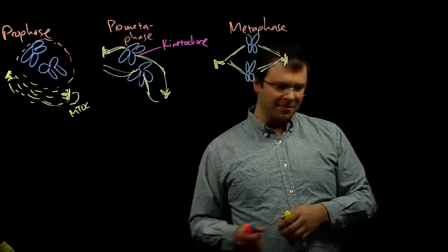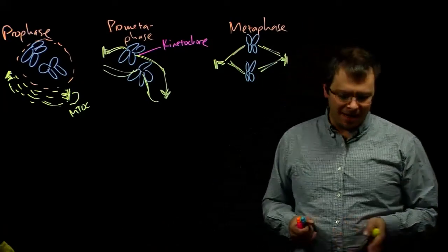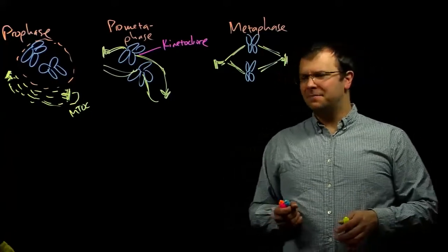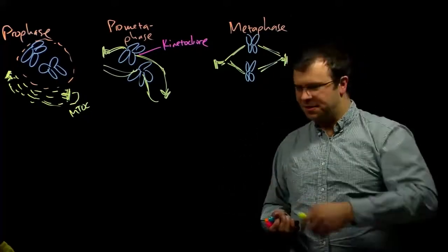These chromosomes are lined up down the center of the cell in a structure that is commonly called the metaphase plate. There's not actually a plate there. They're just all sitting here in a row.